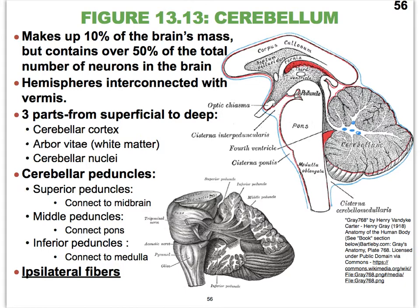Most fibers that arise from the cerebellum are going to be ipsilateral — not all of them, but many of them are. They can be ipsilateral because they do not cross over at all. So they start in the left hemisphere of the cerebellum, because it is bilaterally symmetrical, and tend to stay on the left side of the body. This can be due to no crossing over, or it could be due to crossing over twice.